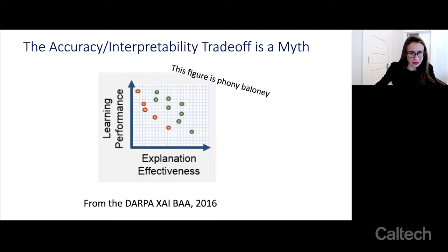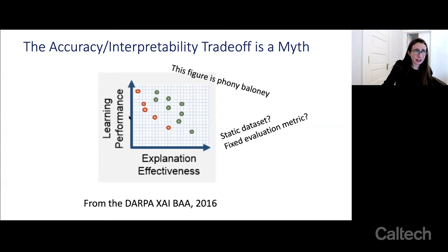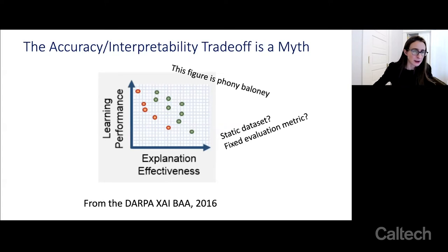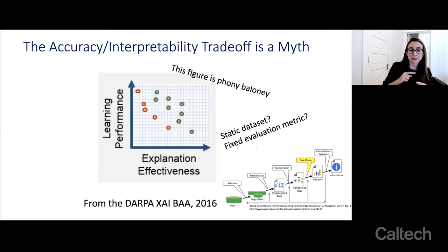The second issue is that this figure seems to be constructed from a static dataset — someone ran a bunch of different machine learning algorithms and plotted them. But this is not how the typical data science process works. In a typical data science process like the KDD process, you would analyze the results afterward and use that interpretation to go back and fix the data or fix the evaluation metric. Being able to understand what the model is doing allows you to do a better job in the full data science process — so that's another reason this figure is misleading.